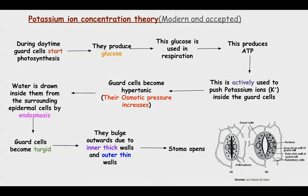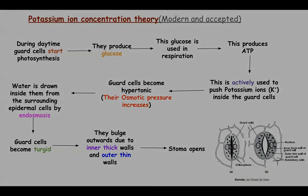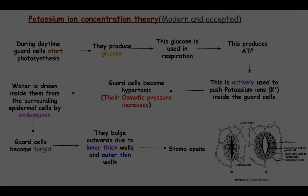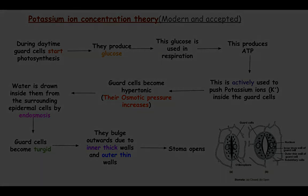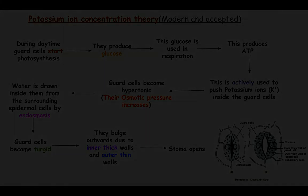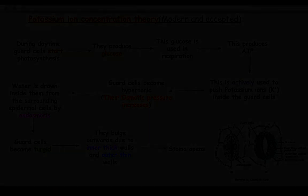During daytime, the stomata exchange gases; at night, the stomata are closed. This is one structure regulated by the movement of the guard cells. You had already covered in the chapter of transpiration that stomatal transpiration is the only type of transpiration which can be regulated — now you can understand why. It is based on the process of photosynthesis, explained by the sugar concentration theory or the potassium ion concentration theory. That's all in this video; the remaining we will cover in the next video. Hope you have understood it all. Thank you very much and God bless you all.